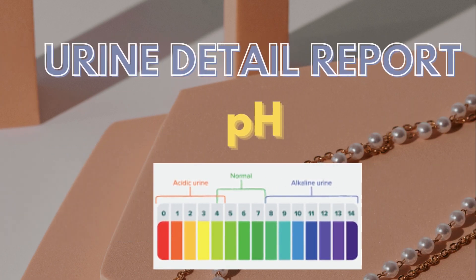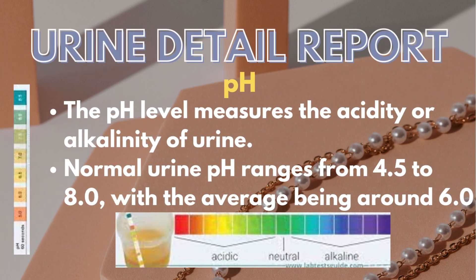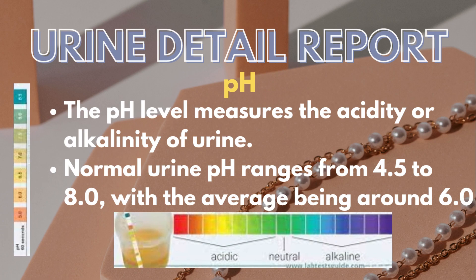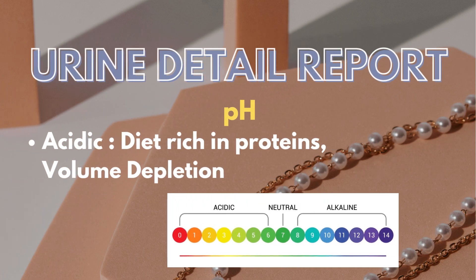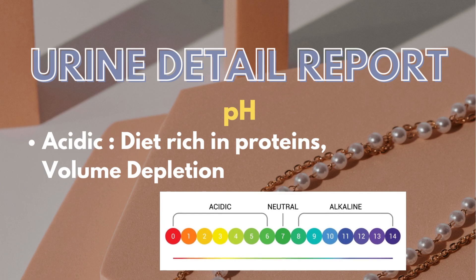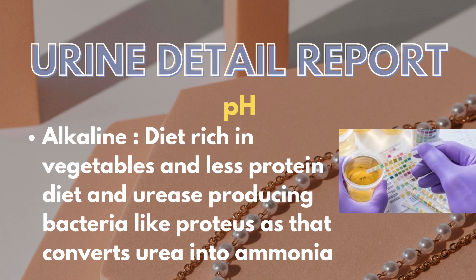Then comes a very important component: pH of the urine, which measures the acidity or alkalinity of urine. Normal urine pH ranges from 4.5 to 8.0, with the average being around 6.0. If the pH is decreased, it may indicate acidic urine due to a diet rich in proteins or volume depletion. If the pH is increased, it may indicate alkaline urine due to a diet rich in vegetables and less protein, or infection with urease-producing bacteria like Proteus, which converts urea into ammonia.